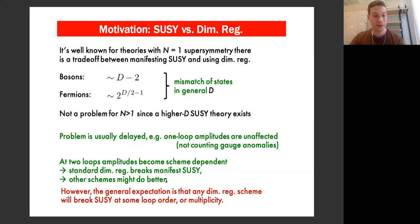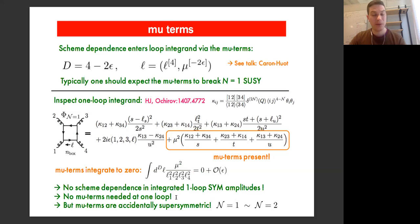At two loops, it's known that amplitudes typically become scheme dependent. If you use standard dimensional regularization — meaning spacetime dimension and states both depend on epsilon — you break manifest supersymmetry. There are other schemes which might do better. But in general, the expectation is that for any dimensional regularization scheme, you will break supersymmetry at some loop order or some multiplicity if you have N equals one.